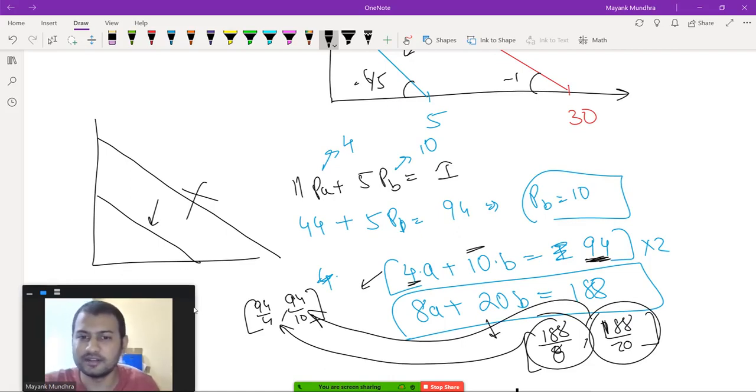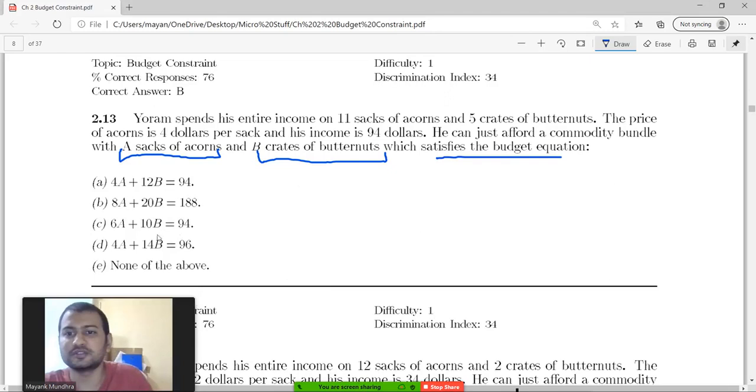It is not different, it is the same equation. This question is basically to tell you that I can multiply the entire budget equation by 2 and the equation will still be the same. The budget set will still be the same, budget line will still be the same.